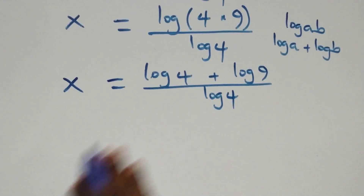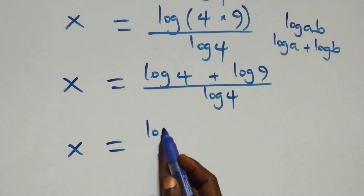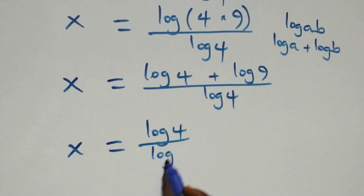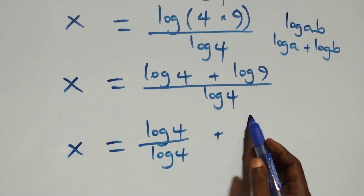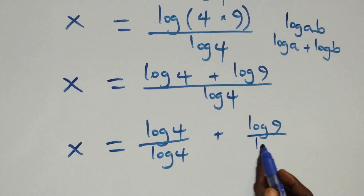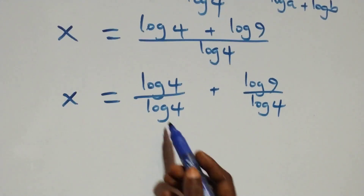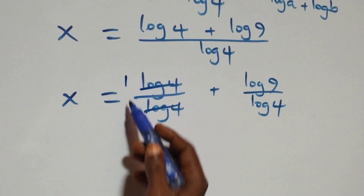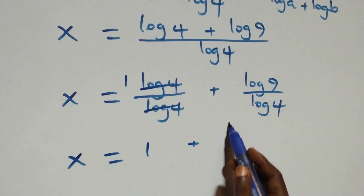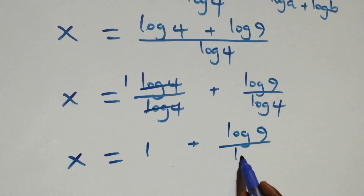We separate this into two fractions: x = log4/log4 + log9/log4. Since log4 cancels in the first fraction, we have 1 remaining, giving x = 1 + log9/log4.